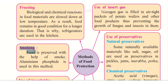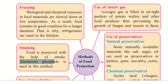The third method is smoking. Food is preserved with the help of smoke — aluminium phosphide is used in this method. This method is used when food has to be preserved for a long period of time.